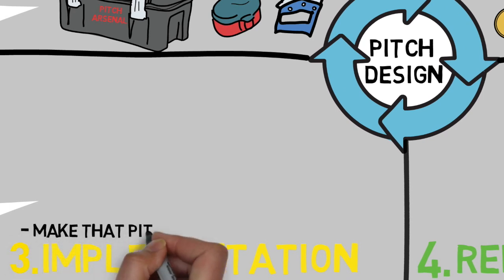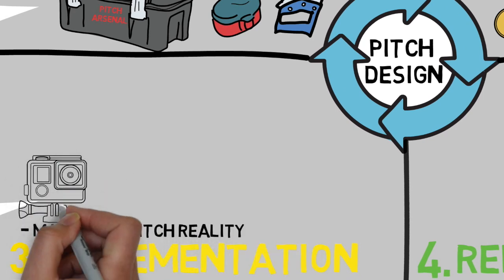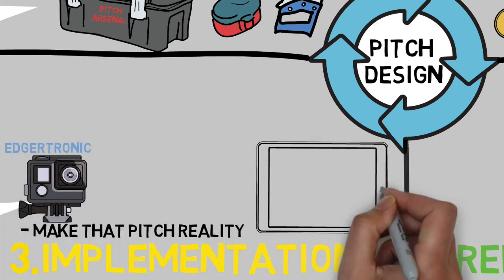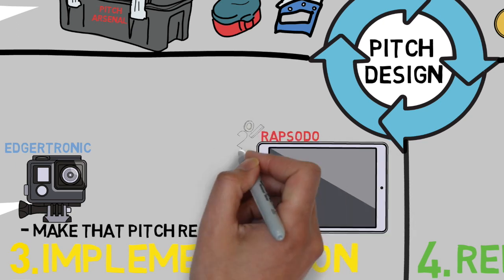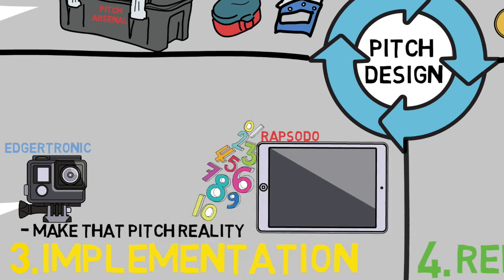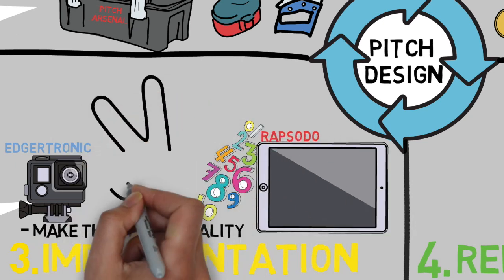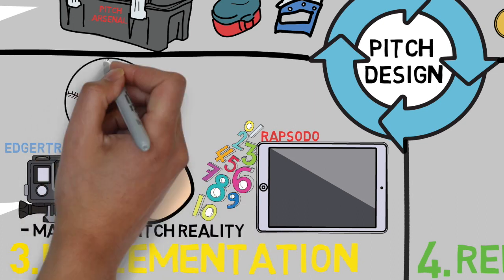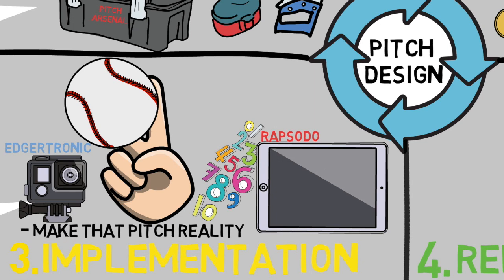The next step is the actual implementation of the pitch that you've planned out. This is when you get back on the mound and start throwing. You'll want to use your Edgertronic and Rapsodo for this portion because it makes the process so much easier with real-time feedback. Here you begin to mess with grips, pressure points, hand or wrist positioning, and trying a ton of different cues to see what will stick and provide the results you were looking for. I could do an entire video on this portion of the process, so if you'd like to see that, let me know in the comments section down below.